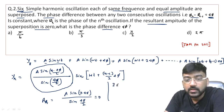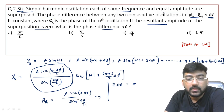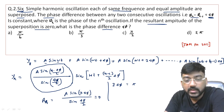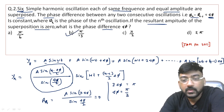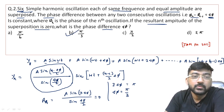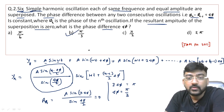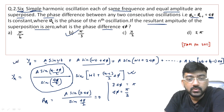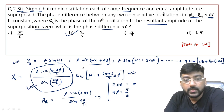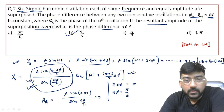Remember this result — the resultant amplitude formula for n superimposed waves with constant phase difference — as it is very helpful. It is also used in N-slit diffraction problems in optics. Keeping this formula in memory will be useful across many sections of physics.